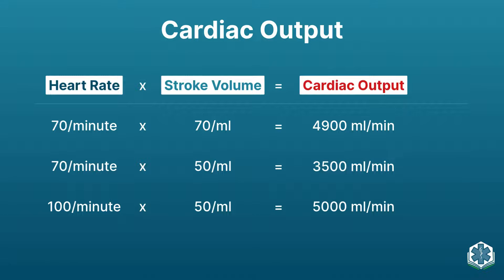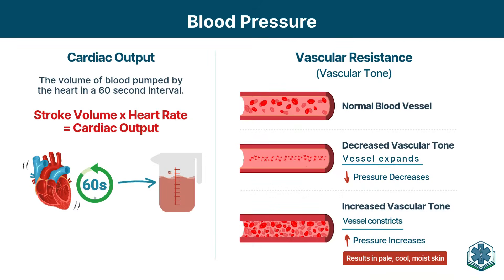If heart rate drops to 50 with the same stroke volume, bradycardia lowers cardiac output. We can increase stroke volume somewhat, but not as easily as we can increase heart rate. On the other end, if heart rate goes up to 220, the ventricles can't fill and you'll be in shock from that as well. So remember: cardiogenic shock from pump failure, very low heart rate, or very high heart rate will all cause it.